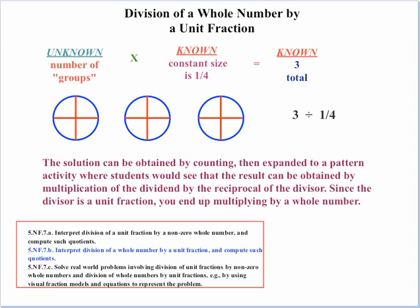Just like before, in a real-life context the solution can be obtained by counting, but then you expand that to a pattern activity where students see the result is obtained by multiplying the dividend by the reciprocal of the divisor. Since the divisor is a unit fraction, you'll actually end up multiplying by a whole number. Here the divisor is one-fourth, and the reciprocal is the whole number four, so we end up with 12.